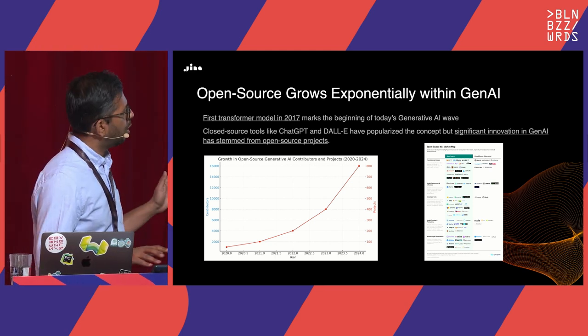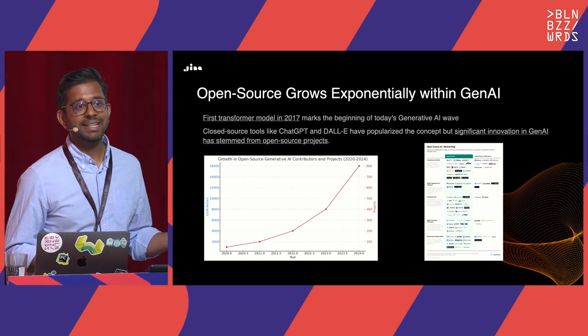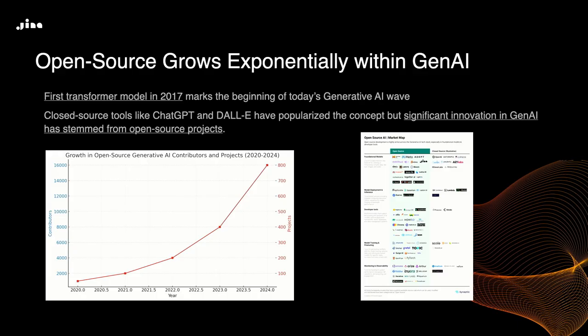Almost all of the generative AI development we've seen has been based on open source. A great example is the transformer architecture — a neural network architecture that allows time series and sequential data prediction. Before transformers, people used recurrent neural networks, which worked up to a point but failed at remembering things from long ago due to issues like exploding gradients. Transformers were a paradigm shift in dealing with sequential data.